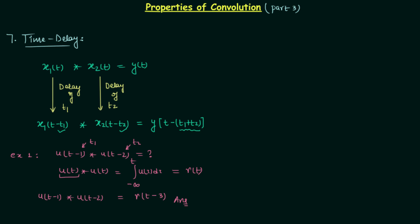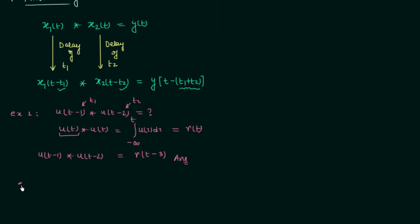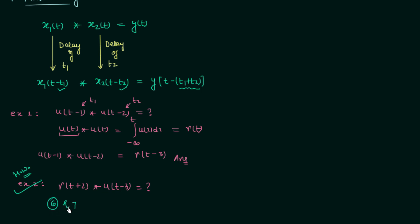Now we will look at problem number two. In problem number two we are convoluting r(t+2) with u(t-3). I will give you this as a homework problem. Once you have the answer, post it in the comment section. If you face any difficulty, revise property number 6 and property number 7, as both will be used to solve this question.